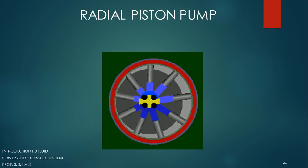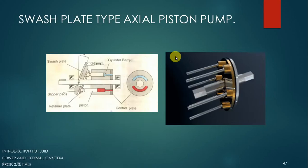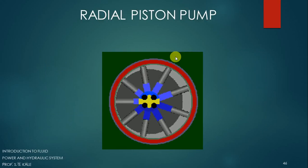This is called a radial piston pump because the pistons are mounted radially along the radius and move along the radius of the system. If you don't provide any eccentricity, this pump will not work. Thank you very much for listening.